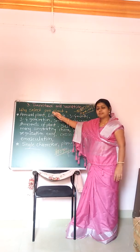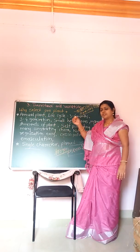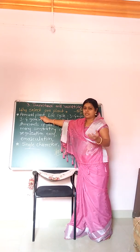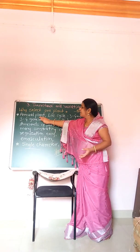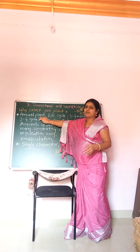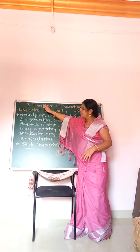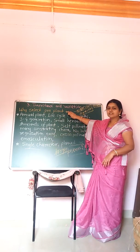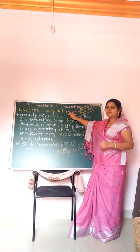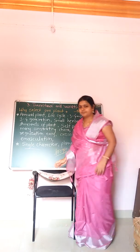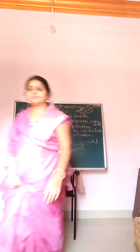Here are some examples of annual plants: the garden pea plant is one, watermelon is another, and maize, wheat, and rice are also annual plants. This topic is based on why the garden pea plant was selected by Mendel.